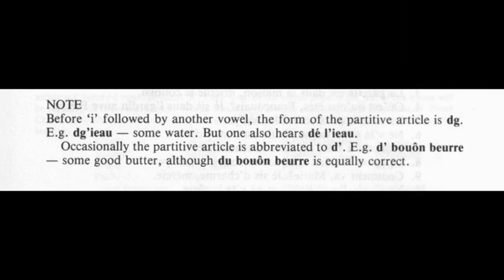Note: Before 'I' followed by another vowel, the form of the partitive article is 'd.' For example: some water — one also hears 'de galette' in the same context.